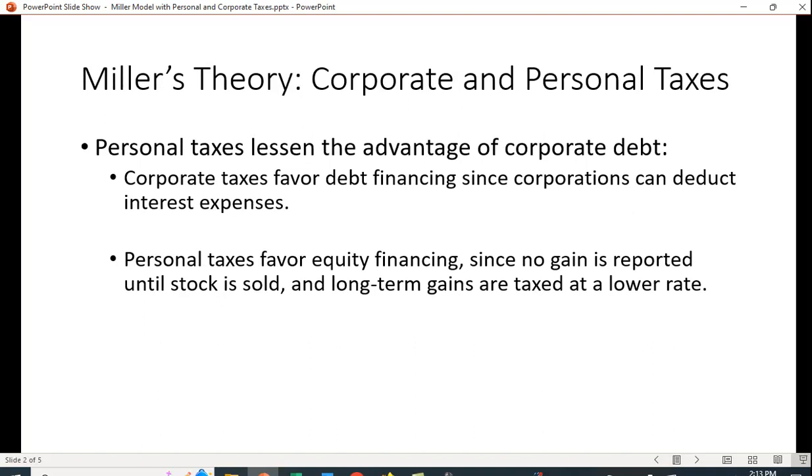Miller proposed an alternative approach that includes corporate and personal taxes. In the previous Modigliani-Miller theorems, they only looked at corporate taxes. Personal taxes lessen the advantage of corporate debt. Corporate taxes favor debt financing since corporations can deduct interest payments. Personal taxes favor equity financing since no gain is reported until the stock is sold, and long-term gains are usually taxed at a lower rate, the capital gains rate.